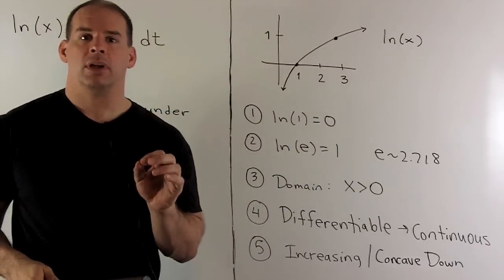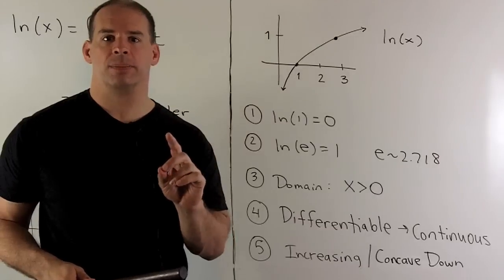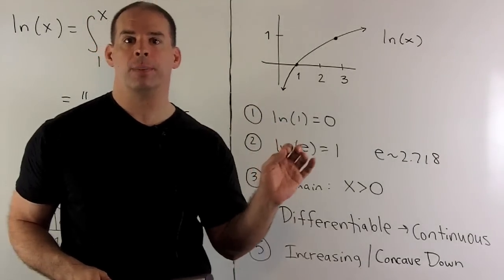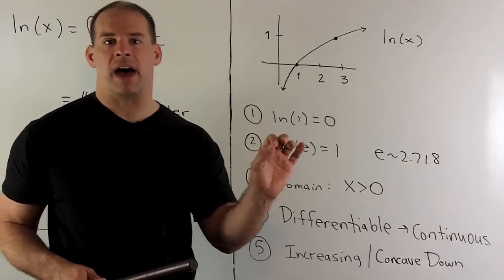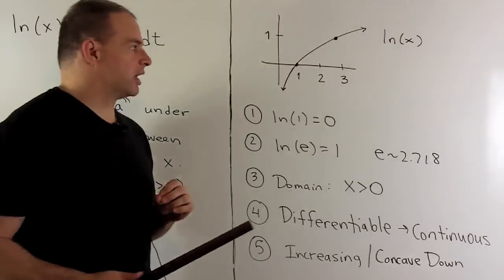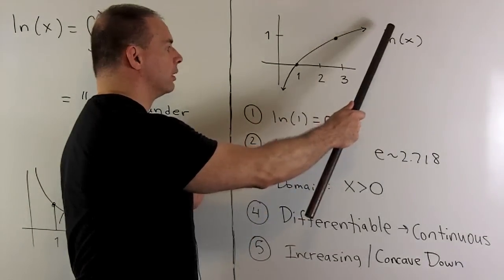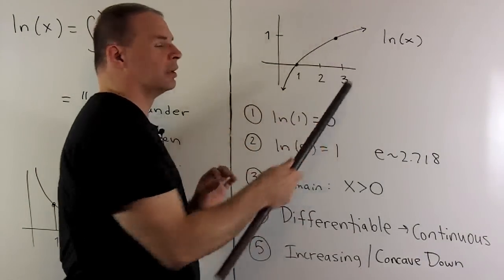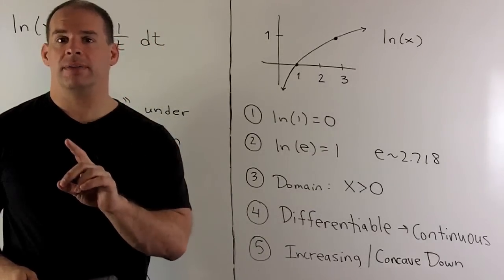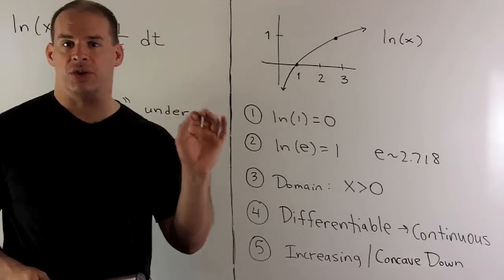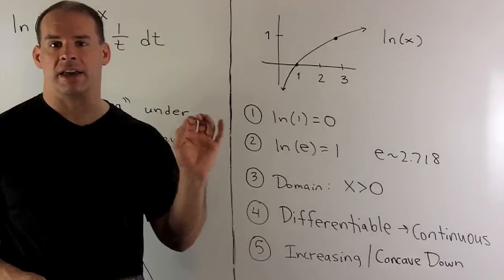We have that the derivative of natural log of x is one over x on the region x greater than zero. So it's going to be differentiable where it's defined, which means it's going to be continuous — we could draw the graph without picking up our pencil. From the derivative, our function is increasing, and if we take the second derivative, we'll see that it's concave down.